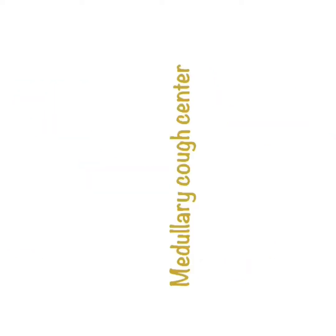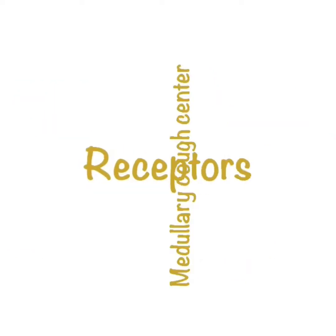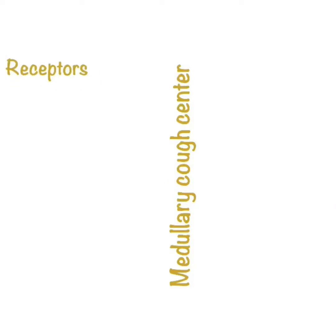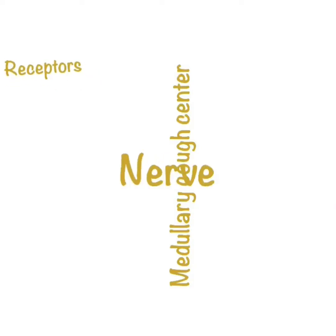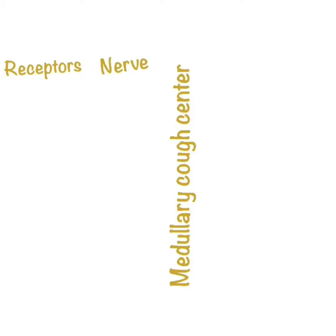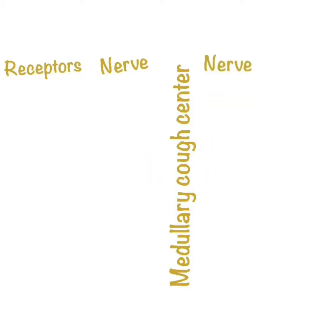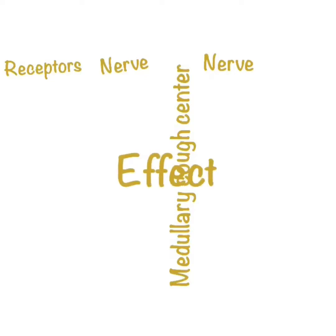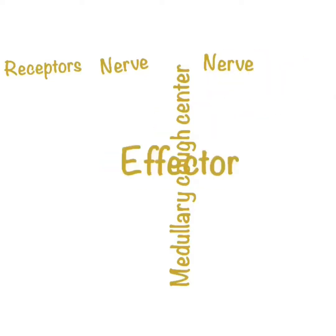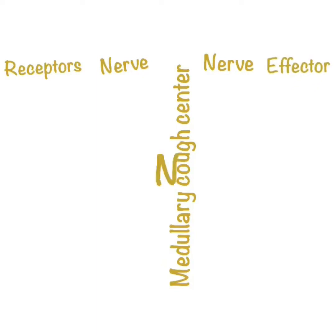Next we have the cough reflex arc. In the cough reflex arc, the first component is in the central nervous system. In the medulla, we have a cough center known as the medullary cough center. In addition, we have sensory receptors where there will be a stimulus, which will travel through a nerve to the medullary center. From there, we have an efferent nerve which produces the response.